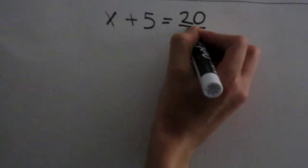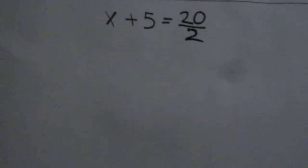x plus 5 equals 20 divided by 2. Okay, so first we're going to need to know what an equation is. An equation is a mathematical sequence which states that two quantities are even.